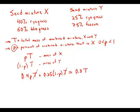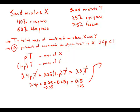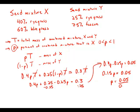As promised, all the T's cancel and we get an equation we can solve for P. We get 0.4P plus 0.25 minus 0.25P equals 0.3. Subtracting 0.25 from both sides gives 0.4P minus 0.25P equals 0.05, which simplifies to 0.15P equals 0.05.